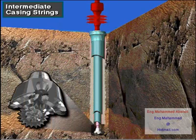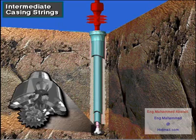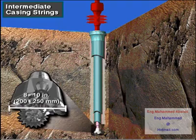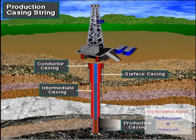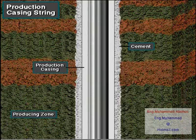To drill the final depth below the intermediate casing, the rig operator selects a bit whose diameter is small enough to fit inside the intermediate casing — say from 8 to 10 inches, or 200 to 250 millimeters. This part of the hole penetrates the producing zone. When cemented in place, production casing seals off the producing zone and readies it for production.